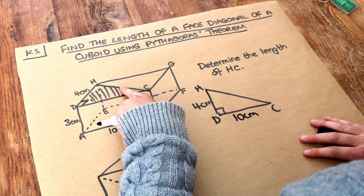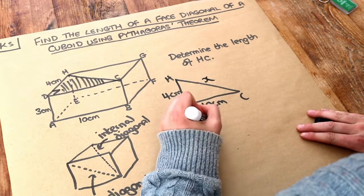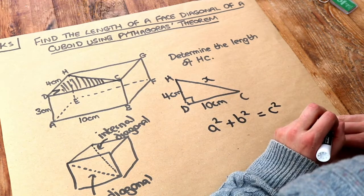And we're trying to find the length of HC, let's call it x, and we just use Pythagoras theorem. Pythagoras theorem, as we explored in previous videos, is just a squared plus b squared equals c squared.